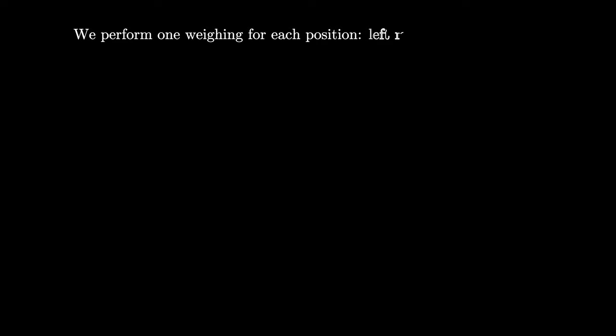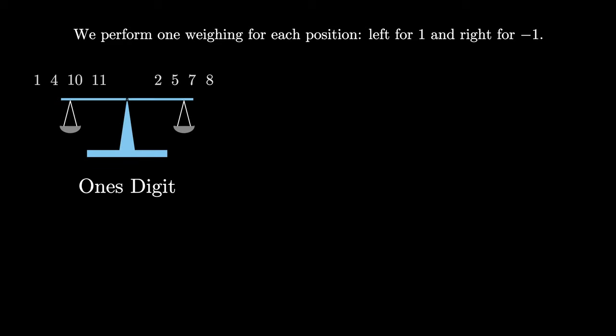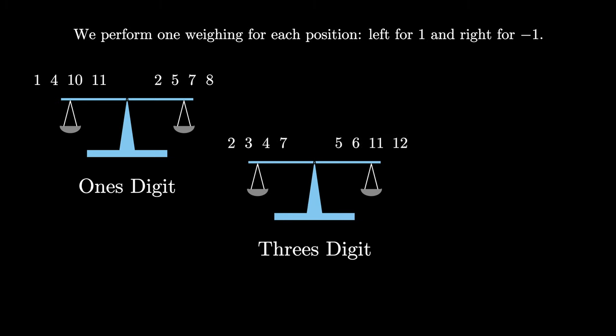We'll construct our weighings one for each position. We'll put a coin on the left if it has a 1 in that position, on the right if it has a negative 1, and leave the coin off if it has a 0. Using our balanced ternary representations, here are the three weighings we get: one for the ones digit, one for the threes digit, and one for the nines digit.